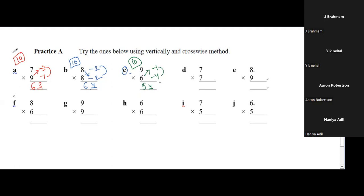Third question: base is 10. First number minus 1, second number minus 4. Crosswise: 6 minus 1 is 5. Reserve one digit. Product of 1 and 4 is 4. Answer is 54. Next: base is 10, 7 minus 3 gives 4 in crosswise. Product of minus 3 and minus 3 gives 9. Answer is 49.